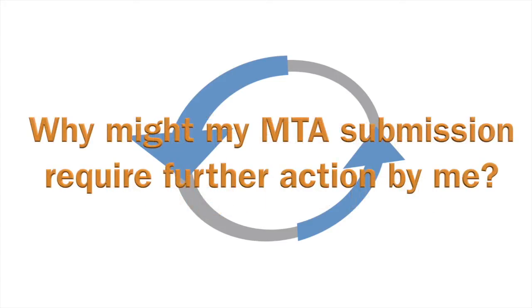Why might my MTA submission require further action by me? There are three main reasons why an MTA submission would not be accepted. Number one: an unauthorized signatory. If we cannot verify that the signatory listed on the MTA is authorized, we will ask you to confirm this person's status or to forward the MTA to the proper person. Number two: content is illegible or missing. All terms included on the MTA's implementing letters must be legible in order for the document to be approved. If any text is cut off, blurry, or pages are missing, we will not be able to accept your submission. Number three: content is modified. If content in the submitted MTA varies from the information in our records, we will ask you to verify which information is correct. We can then make modifications to the names or addresses on your MTA and send you a corrected copy. Please note that Addgene cannot modify the terms of the UBMTA.